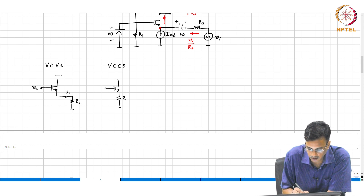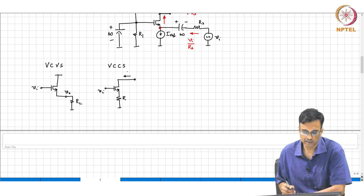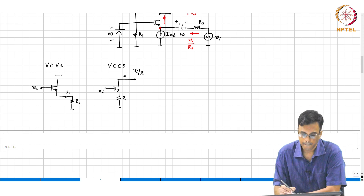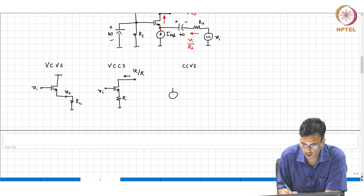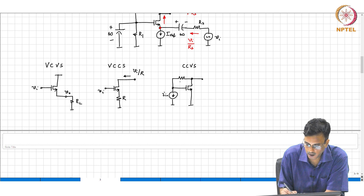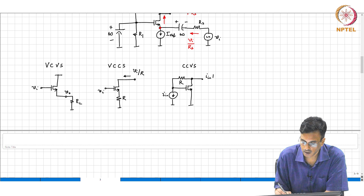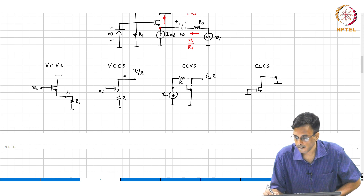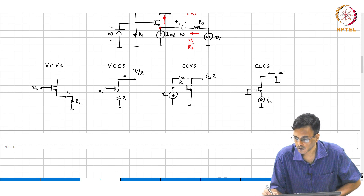This is R, this is Vi. What is the transconductance if Gm is very large? The current is Vi by R. The current controlled voltage source gives an incremental output voltage of i_n times R, and the current controlled current source gives i_out equals that.